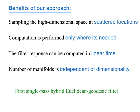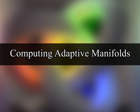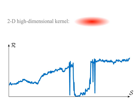Our approach is also flexible enough to demonstrate the first single-pass hybrid Euclidean geodesic filter. We compute the adaptive manifolds using a hierarchical approach. Given an input signal, the first manifold is defined by low-pass filtering each sample. The standard deviation of this low-pass filter is given by the desired spatial standard deviation of the high-dimensional kernel.